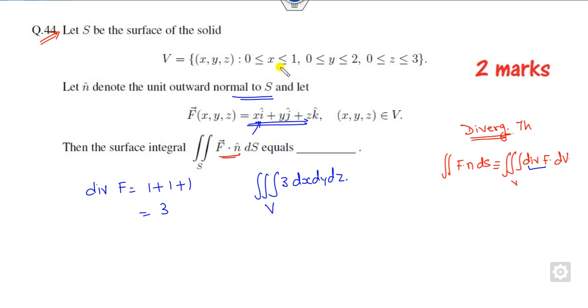Since limits are constant, 3 is outside over the domain x, domain y, domain z. Since limits are constant you can simply integrate. This is 1 minus 0, this is 2 minus 0, this is 3 minus 0. So this is 3 times 6, which is 18, the right answer.